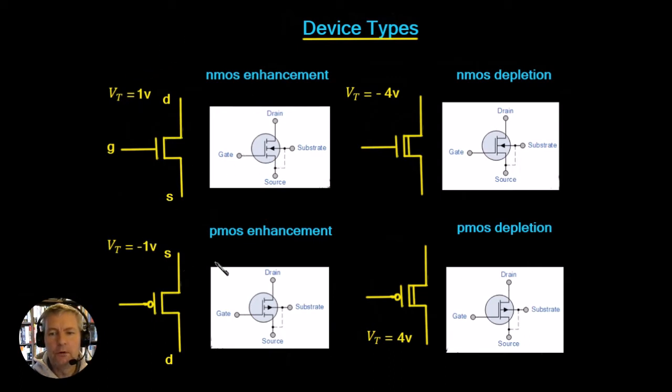Now we've also got the PMOS enhancement device, and you can see the threshold voltage for this is going to be a value of minus one volt. This is the schematic you'll sometimes see, but this is the one we'll actually be using. It's just got the little circle here.